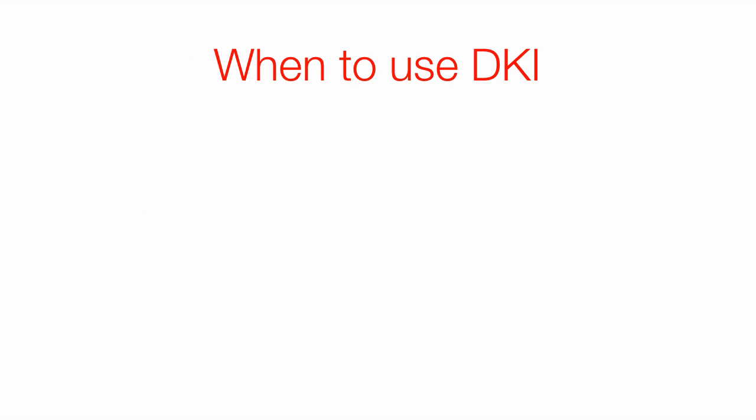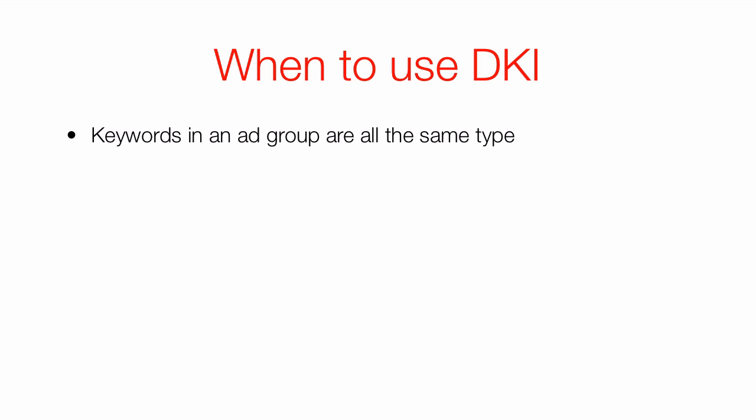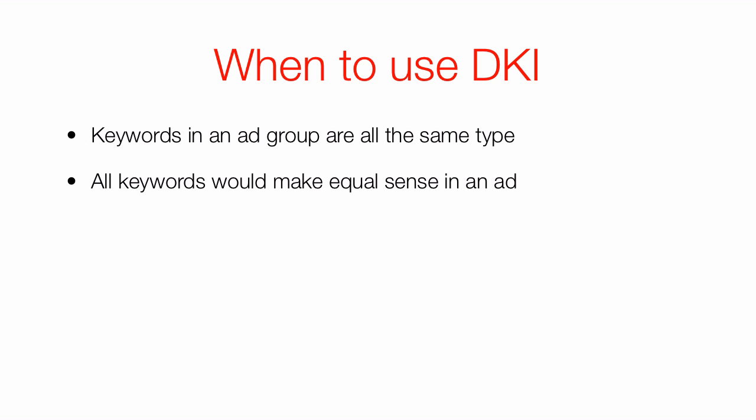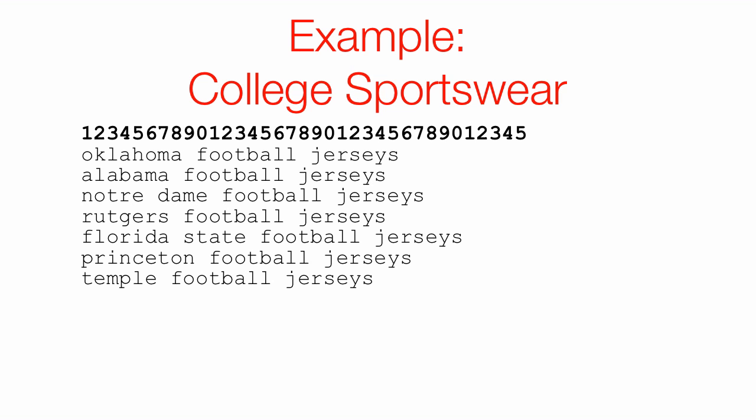So when should you use Dynamic Keyword Insertion? When all the keywords in an ad group are the same type, and when all the keywords would make equal sense in an ad. Here's an example: college sportswear, where all the keywords — Oklahoma, Alabama, Notre Dame, et cetera, all football jerseys — are below 35 characters. So if the keyword alone appeared in a description line, all of these would work.